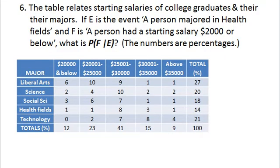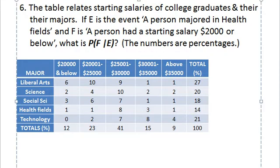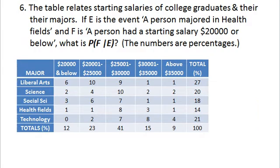The table relates starting salaries of college graduates and their majors. E is the event a person majored in health fields, and F is the event a person had a starting salary of $20,000 or less. What is the probability of F given E?